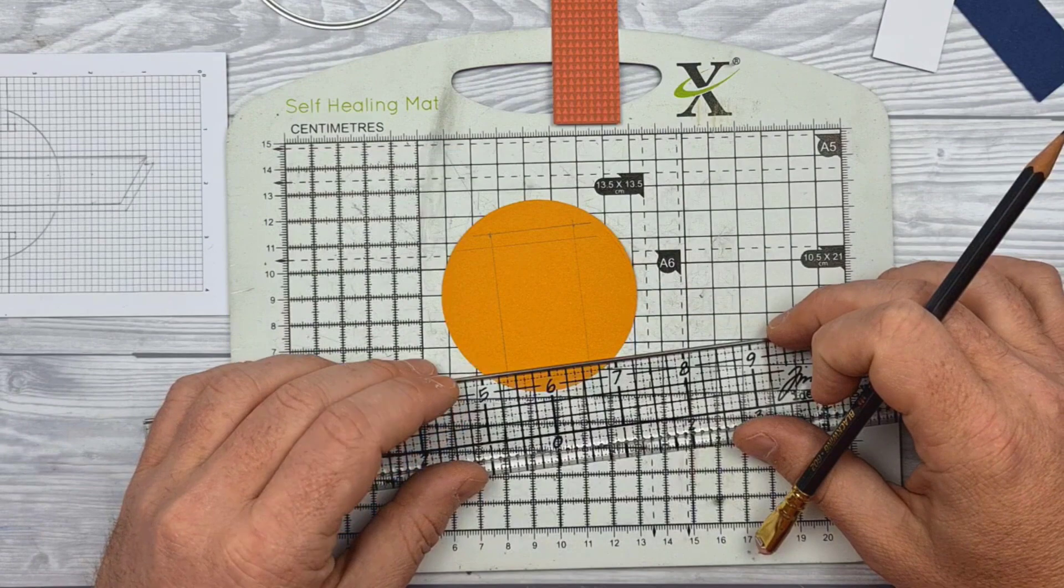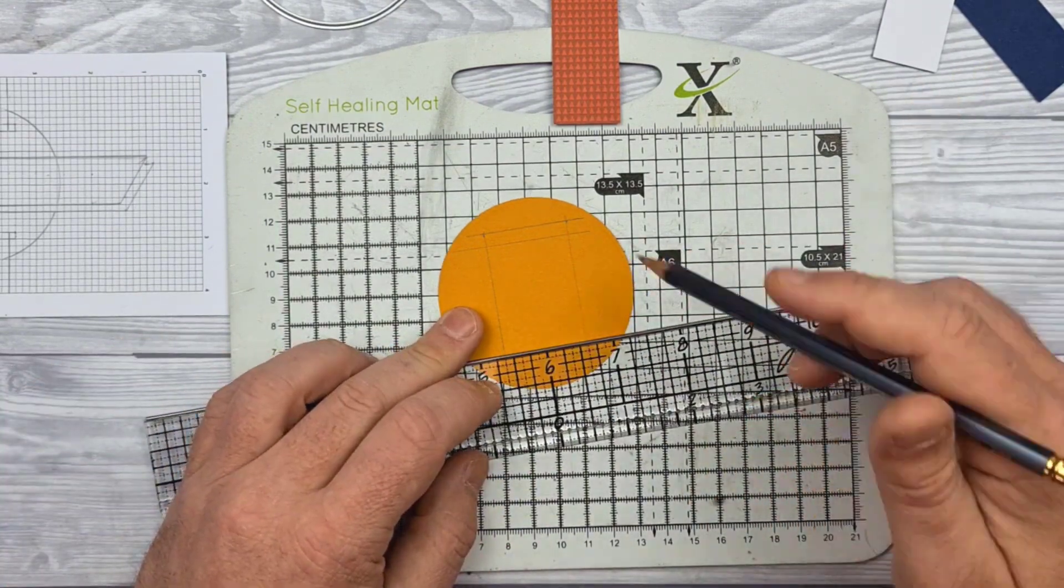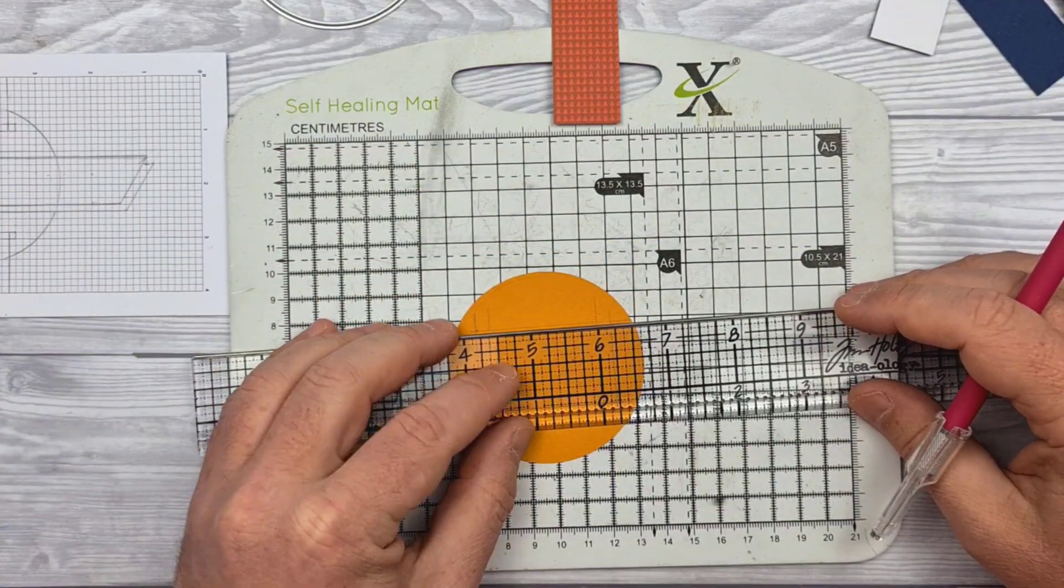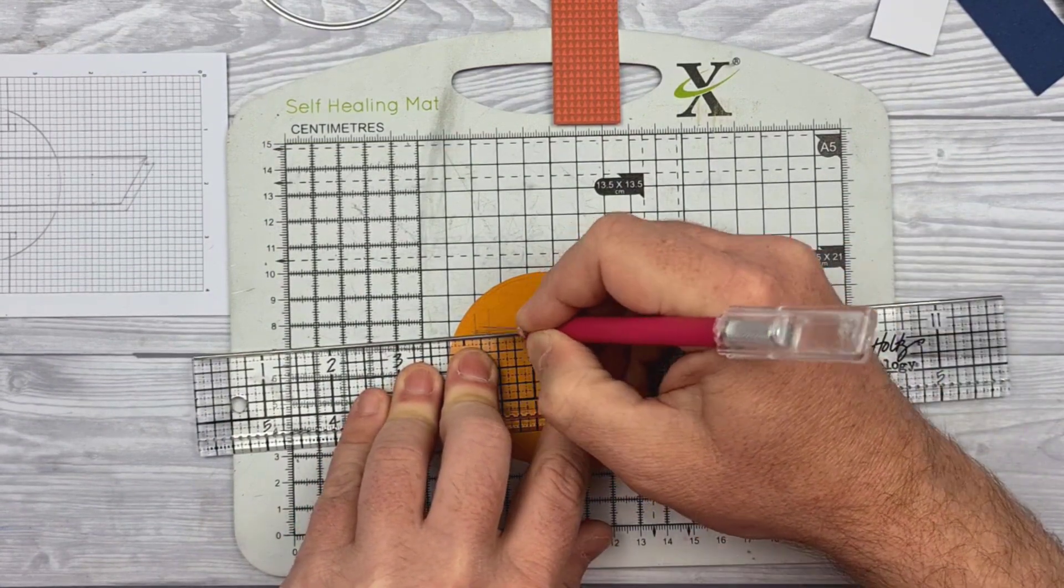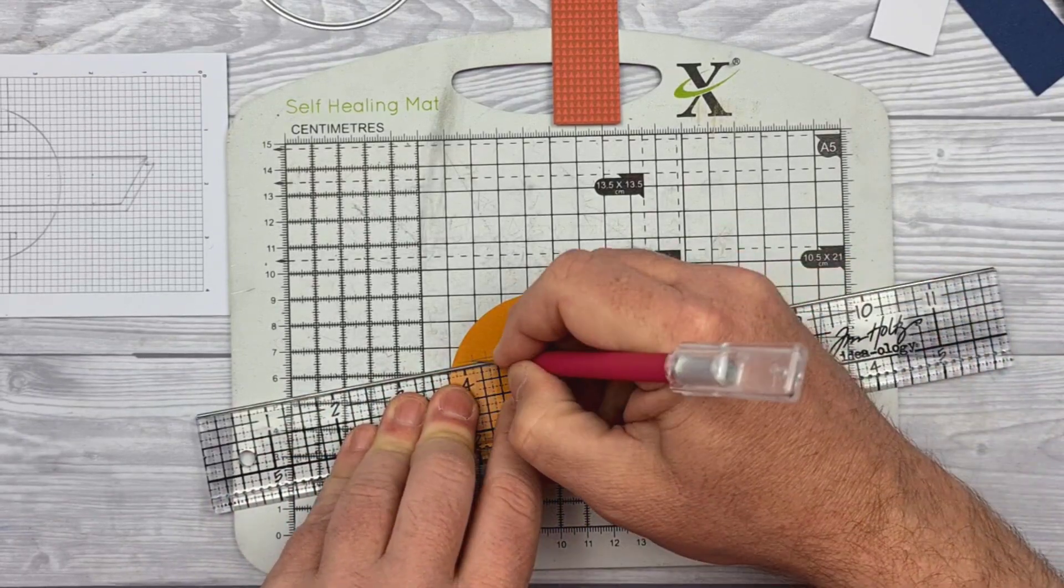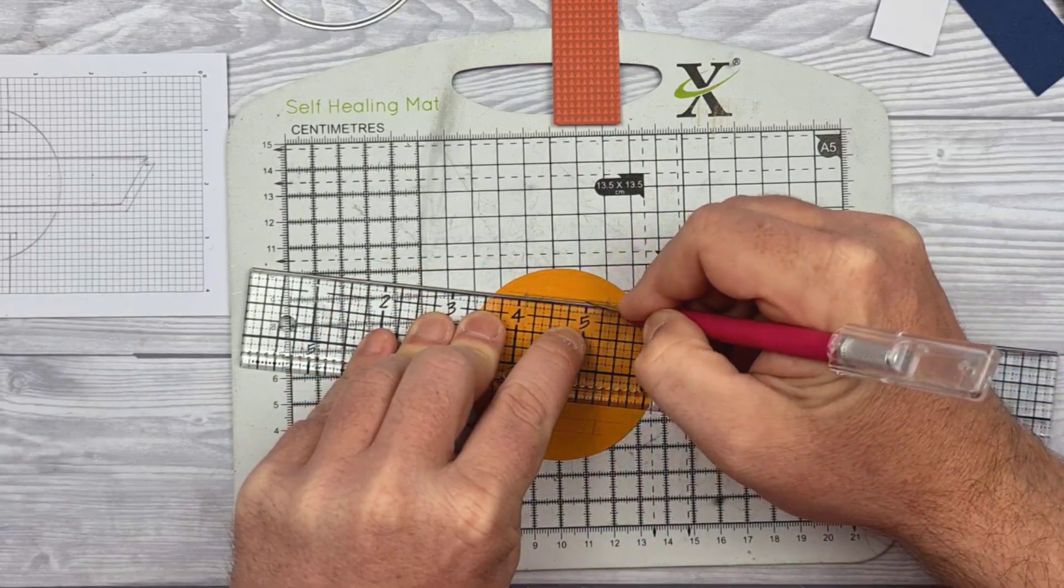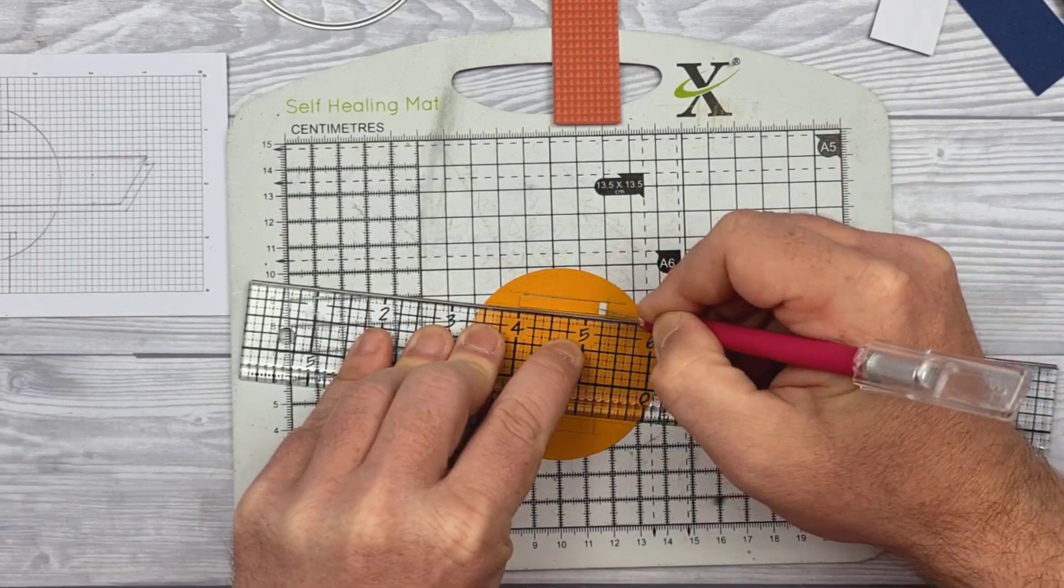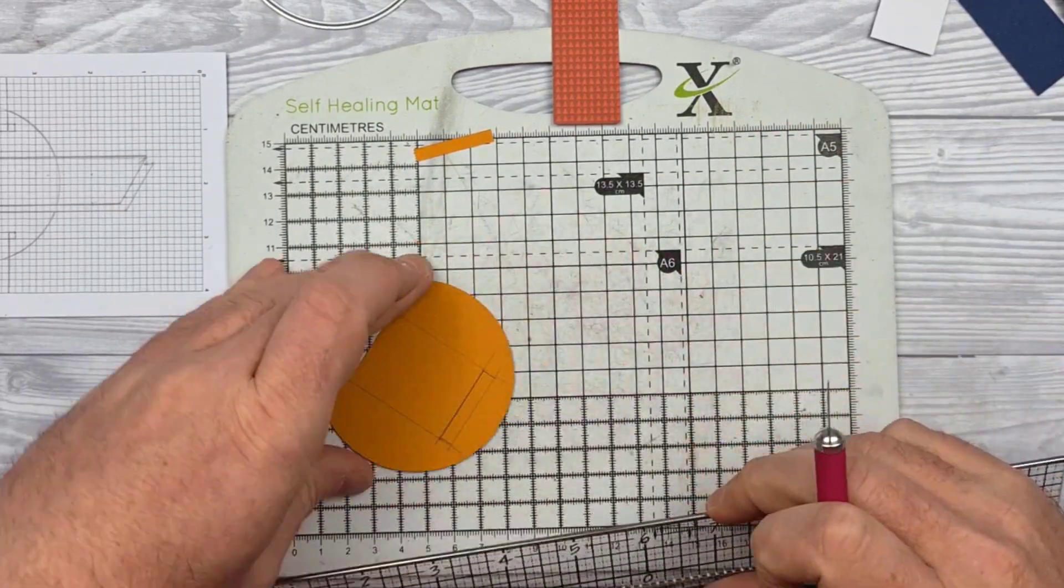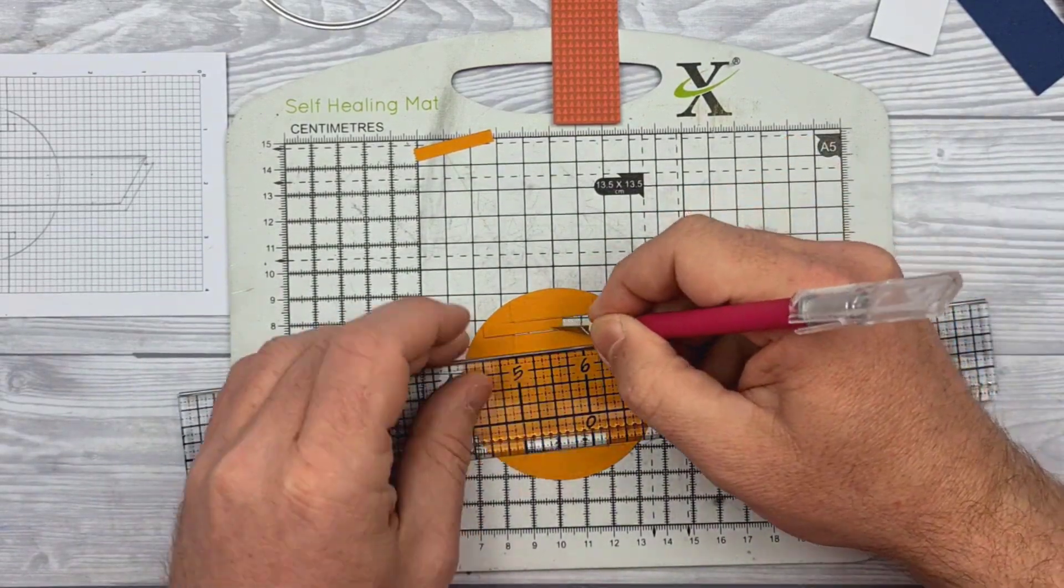But there is a difference when you die cut something because you've got the raised edge. I'm not being particularly precise because you won't see the pencil marks and I just want to be able to thread that paper through this. Realistically I could have just cut one slit with the craft knife and threaded it through, but I thought that it would be nice to make it look as if it's like a watch strap attaching to a watch face.